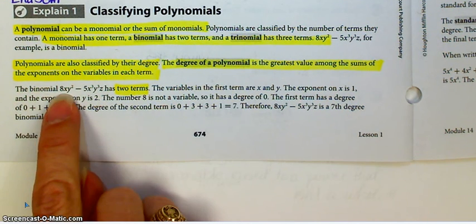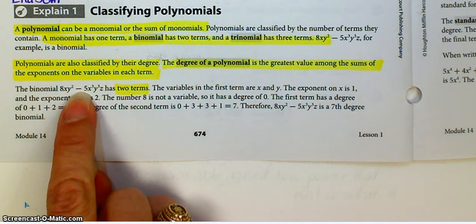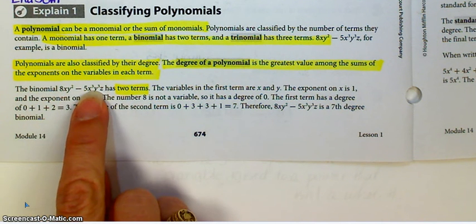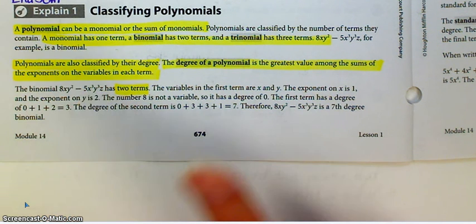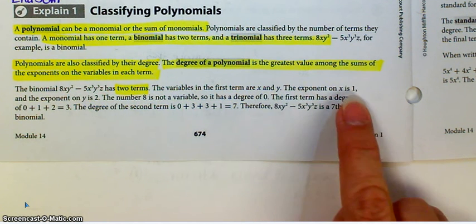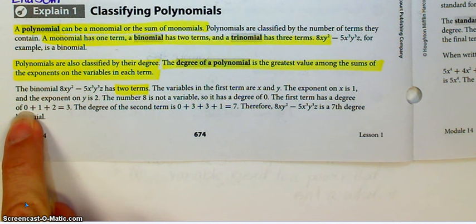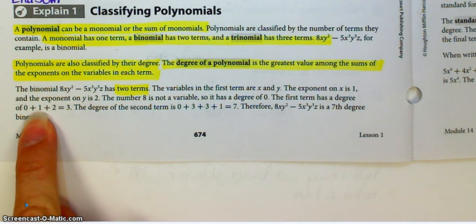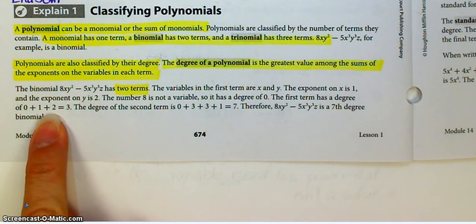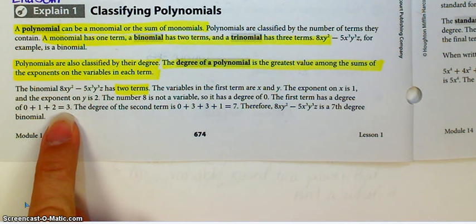The binomial they just mentioned is 8xy² minus 5x³y³z — there are two terms. The variables in the first term are x and y. The exponent on x is 1, the exponent on y is 2. The number 8 is not a variable, so its degree is 0. So the degree of the first term, 8xy², is 0 + 1 + 2 = 3.